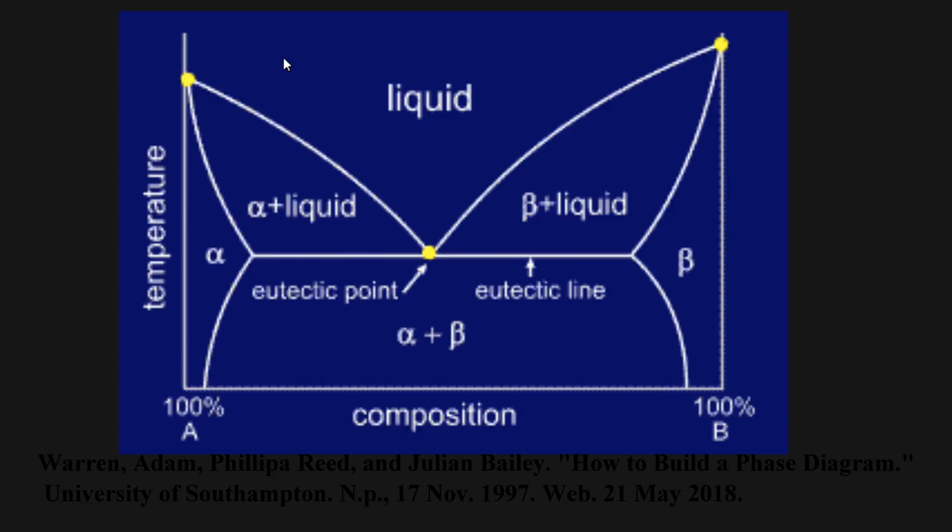Eutectics are commonly mapped onto phase diagrams. This specific diagram is for a binary eutectic alloy or an alloy consisting of two different metals. On the vertical axis is temperature and on the horizontal is the concentration of one metal in another. You can see that there are numerous regions inside the graph. Each of these sections designates a specific phase or structure that will form in the alloy at a given temperature and concentration of each metal.